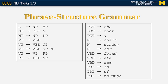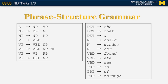A noun can be 'child,' 'window,' or 'car.' A past tense verb is either 'found,' 'ate,' or 'saw.' And we have three prepositions: 'in,' 'of,' and 'through.' So if we want to produce a parse tree for a sentence, we can build an entire representation like this for: 'The child saw the car through the window.'